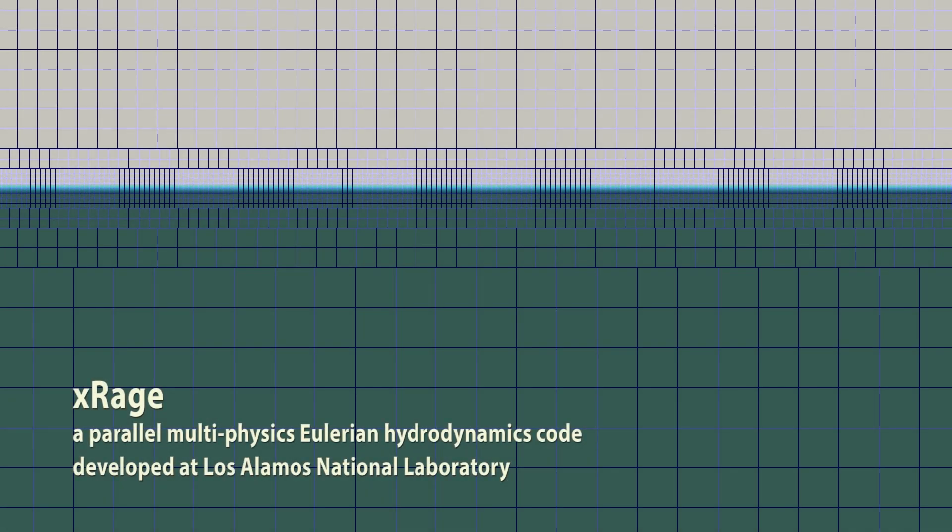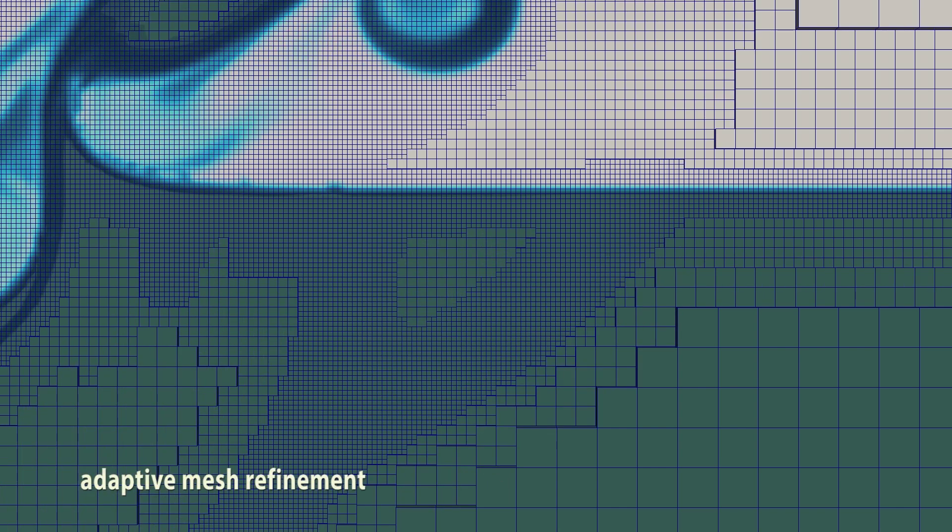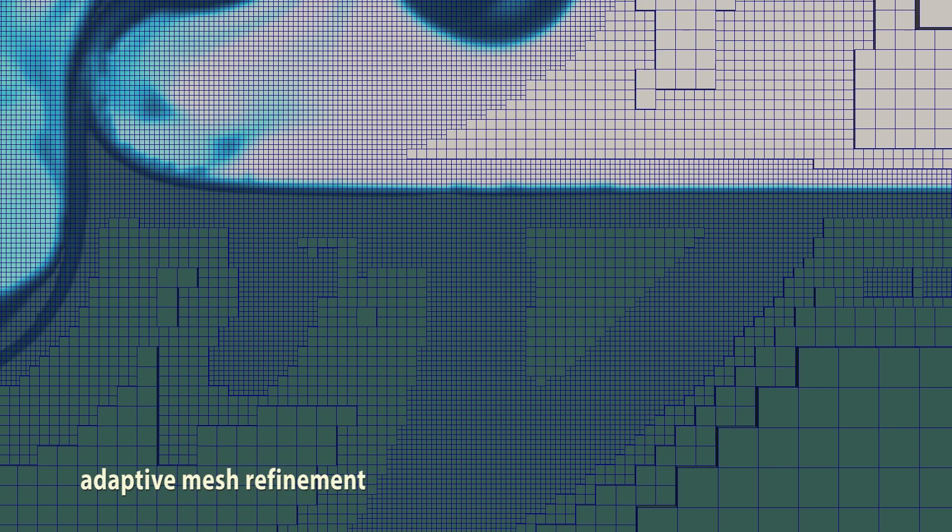We used XRAGE, a parallel multiphysics Eulerian hydrodynamics code. XRAGE uses adaptive mesh refinement to continually subdivide computational cells in important areas, applying more computing power to where it's needed.